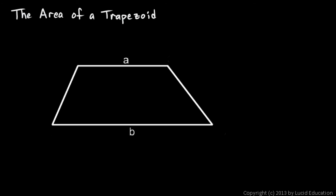A trapezoid can be thought of as kind of like a rectangle. It has a certain width and it has a certain height. The formula for the area of a rectangle is width times the height.